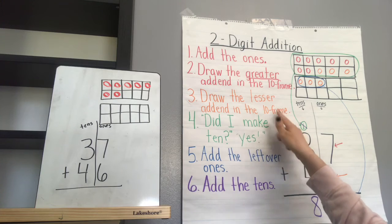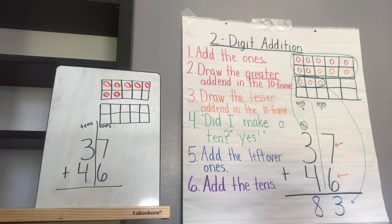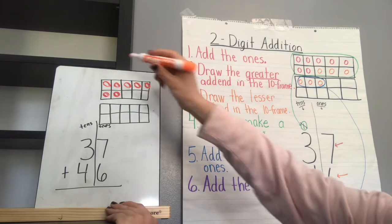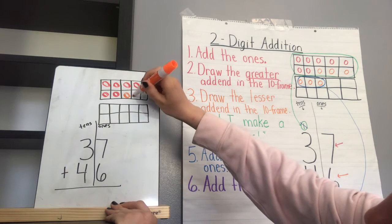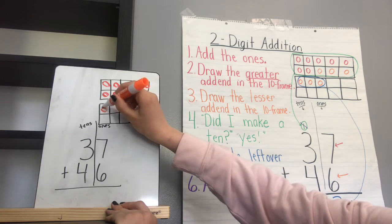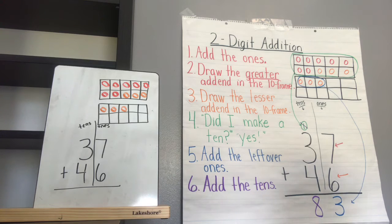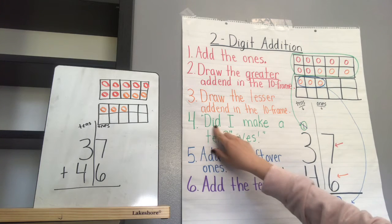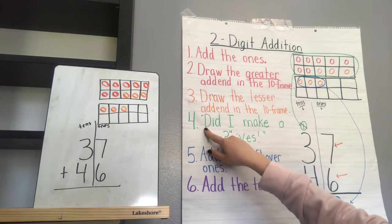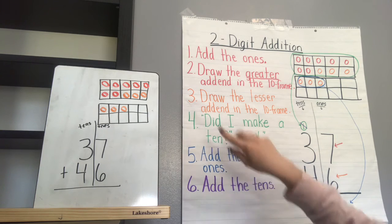The third thing we need to do is draw the lesser addend in the 10-frame. The lesser addend would be 6, because 6 is smaller than 7. Count with me: 1, 2, 3, 4, 5, 6. Nice job. Then we have to ask ourselves a very important question: did I make a 10?